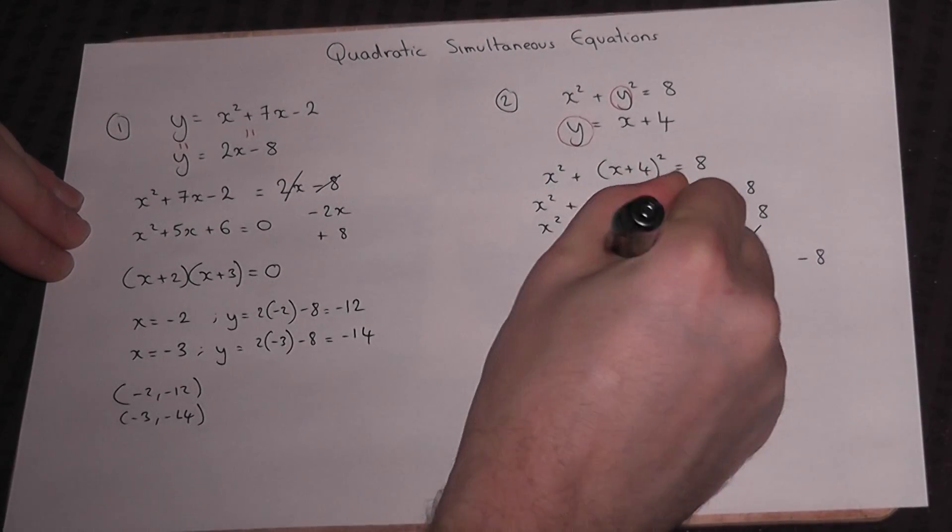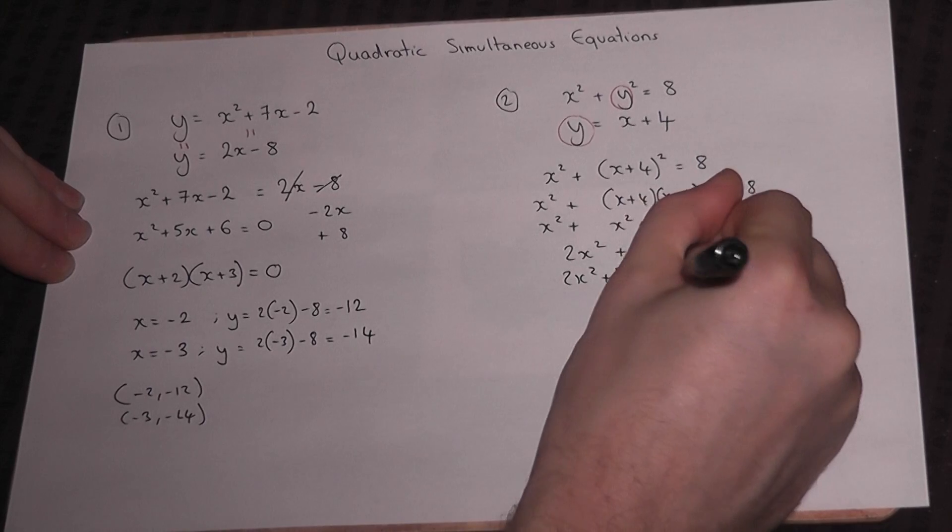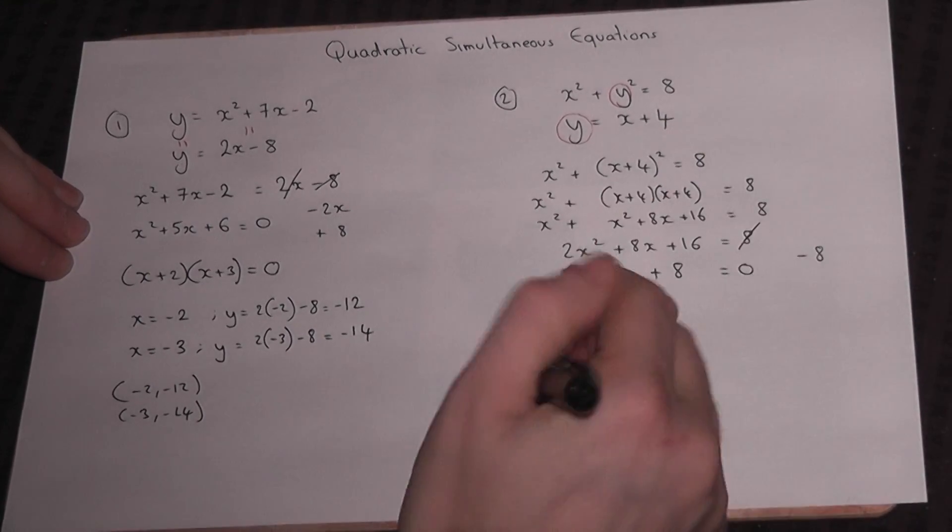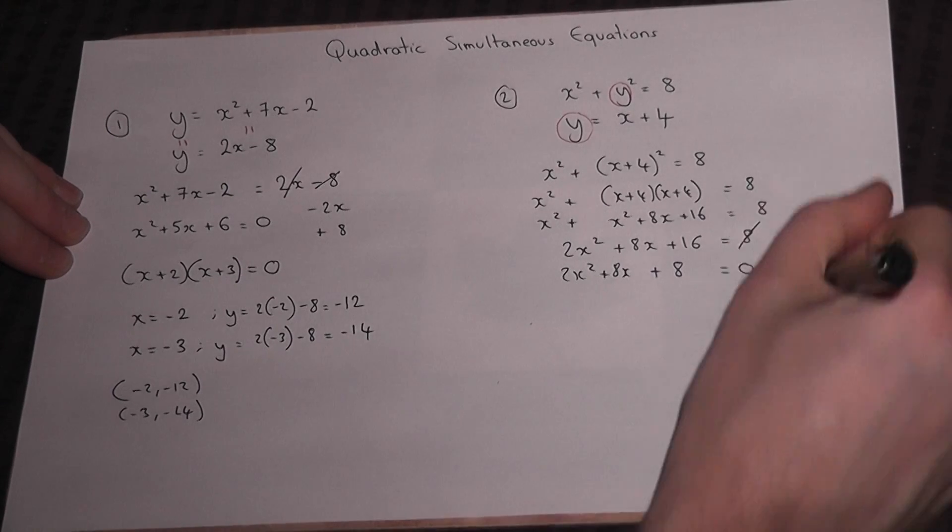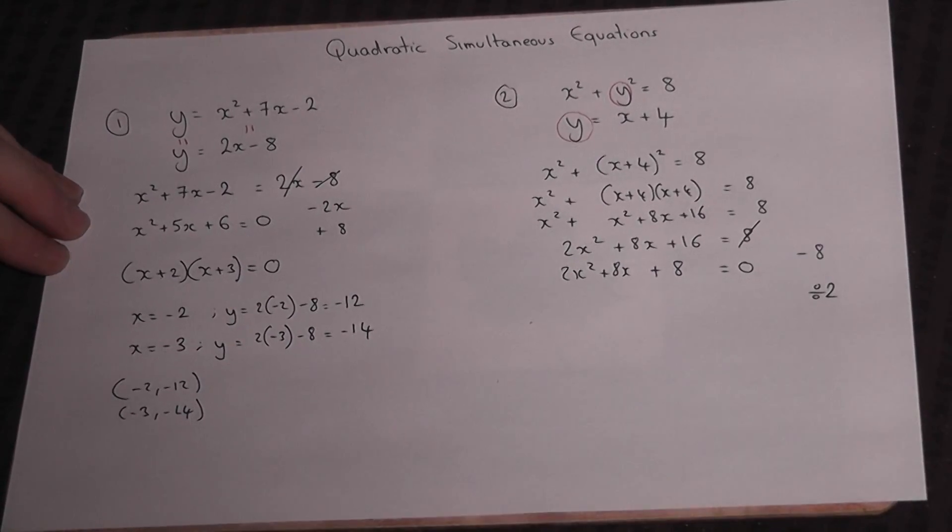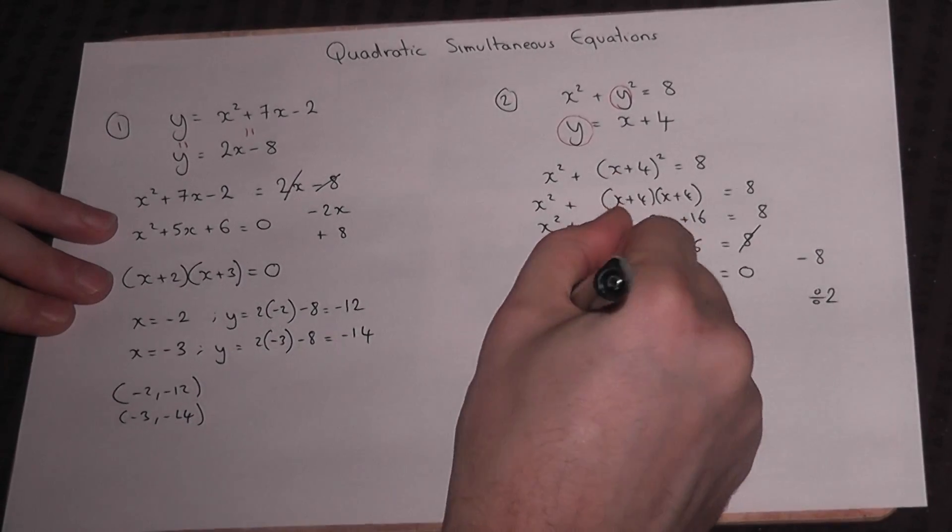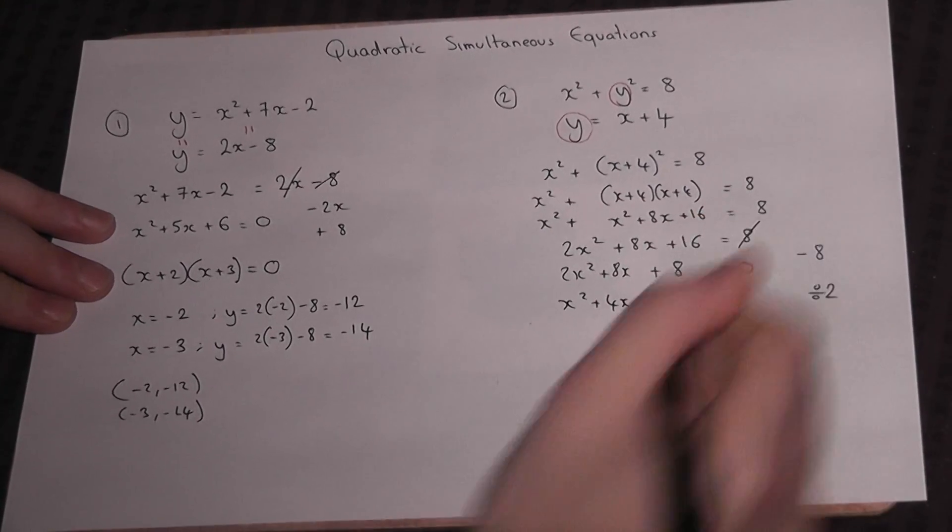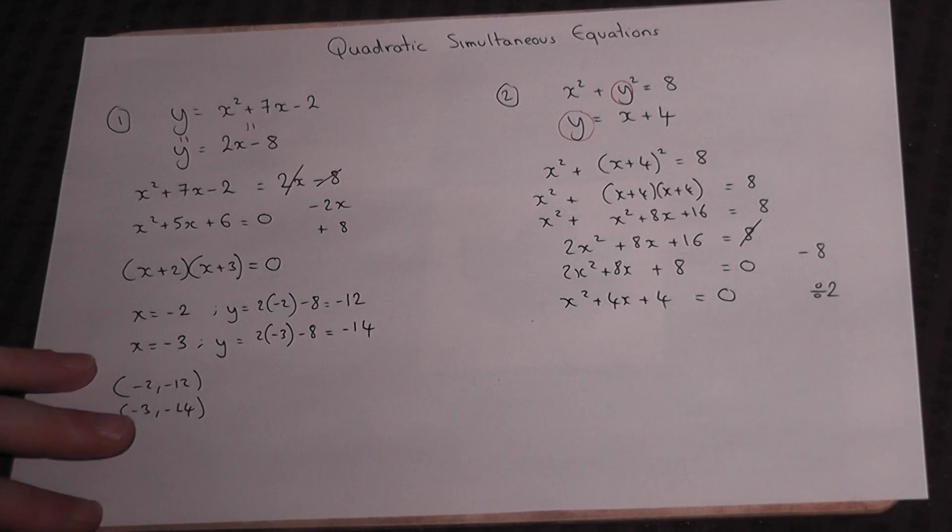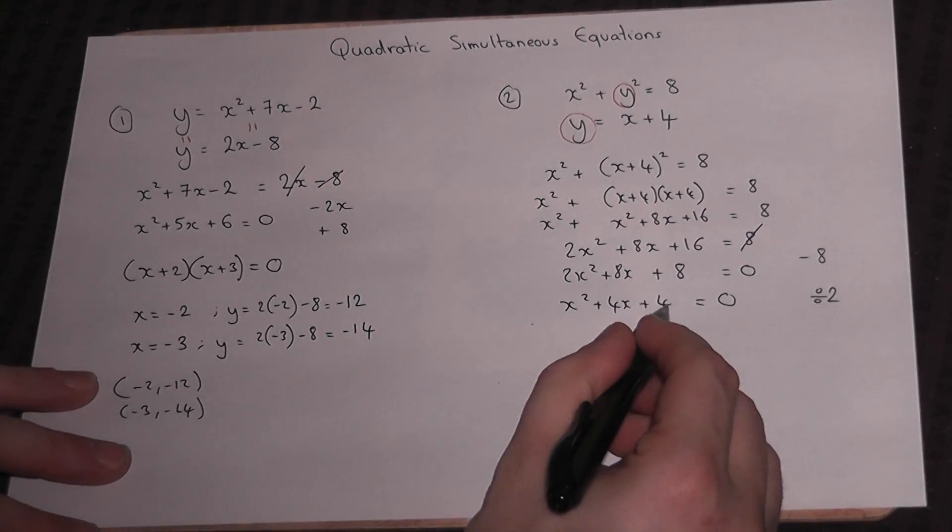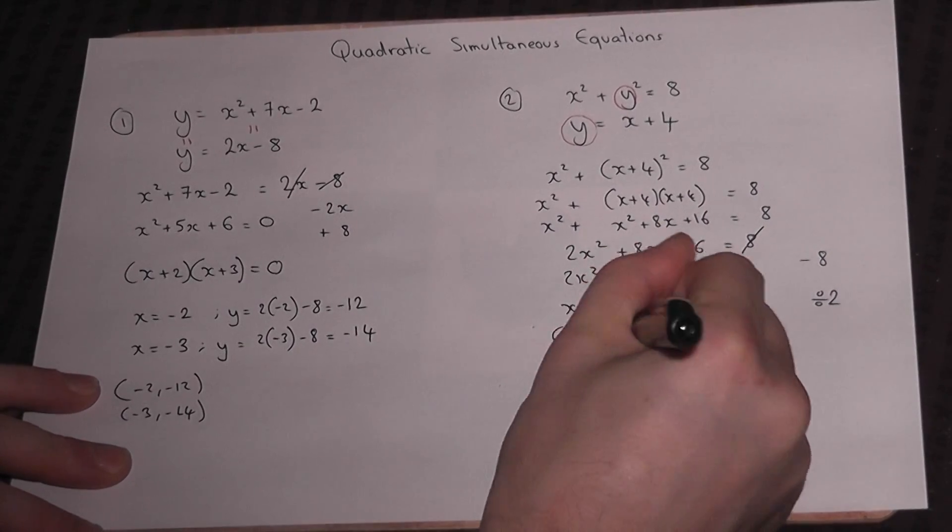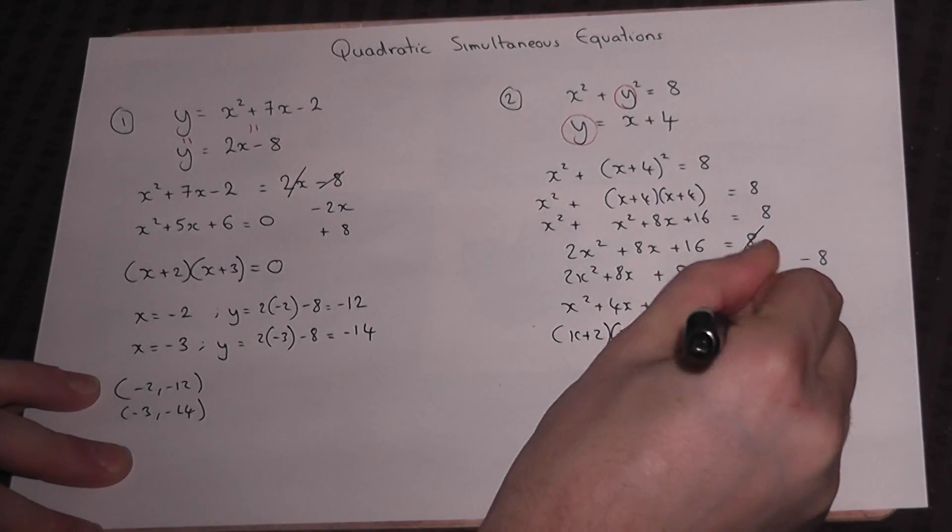So we get 2x² + 8x + 8 = 0. The next trick is to look for a common factor. I can divide by 2. So I'm left with x² + 4x + 4 = 0. This now factorizes. 2 times 2 is 4, and 2 plus 2 is 4. So we get (x + 2)(x + 2) = 0.